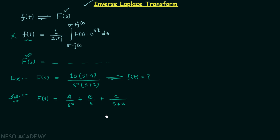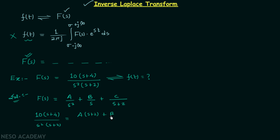Partial fractions are not in the scope of this course — it is part of mathematics, so it is your responsibility to understand the basics of partial fractions first and then proceed with the inverse Laplace transform. By using partial fractions we can write F(s) like this, and we know F(s) is equal to 10(s + 4) divided by s²(s + 2). So in place of F(s) I will write 10(s + 4) divided by s²(s + 2).